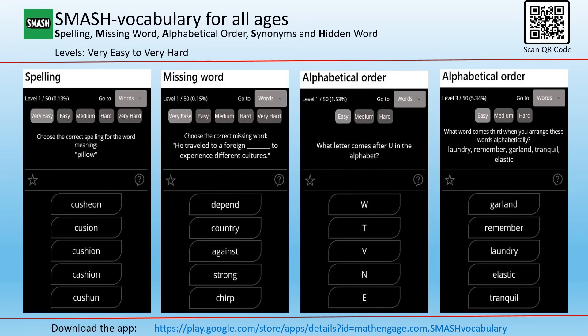First up is the Smash Vocabulary app. The spelling section helps you practice spelling words correctly. The missing word activity challenges you to fill in blanks, improving your contextual understanding. Alphabetical order helps you arrange words from A to Z, sharpening your sorting and categorization skills.